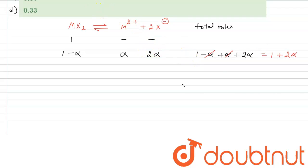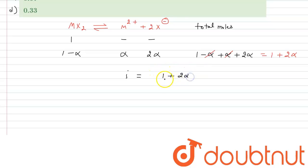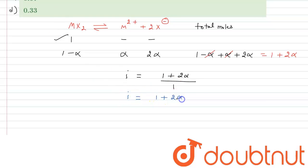Now, the van't Hoff factor i equals the total number of moles after dissociation divided by the initial moles. The total moles after dissociation is 1 + 2α, and the initial moles of MX₂ is 1, so i = 1 + 2α.